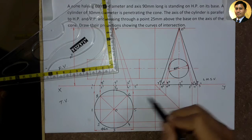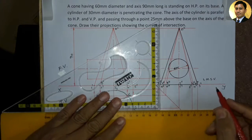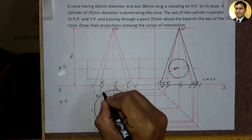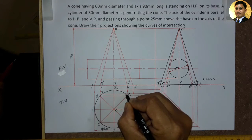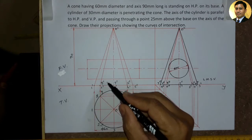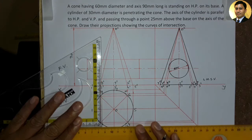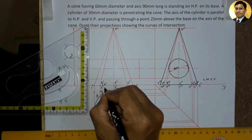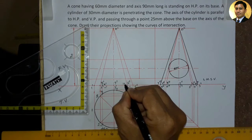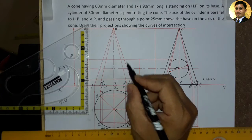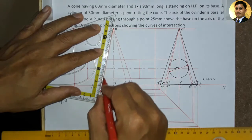Left hand side view mein cylinder ke tangent points par points 9 double dash, 10 double dash, 11 double dash, aur 12 double dash mark karenge. Ab in points ko top view mein projection transfer karenge. Top view mein yahan point, yahan point mark karenge — points 9 dash, 10 dash, 11 dash, aur 12 dash — corresponding generators par.